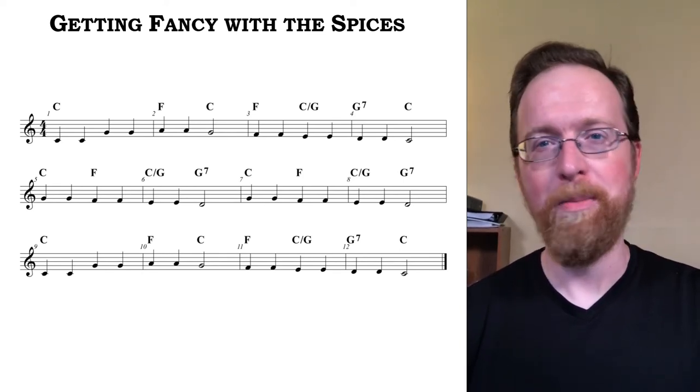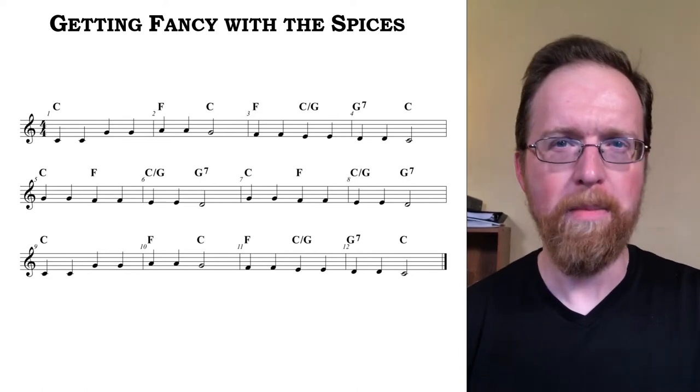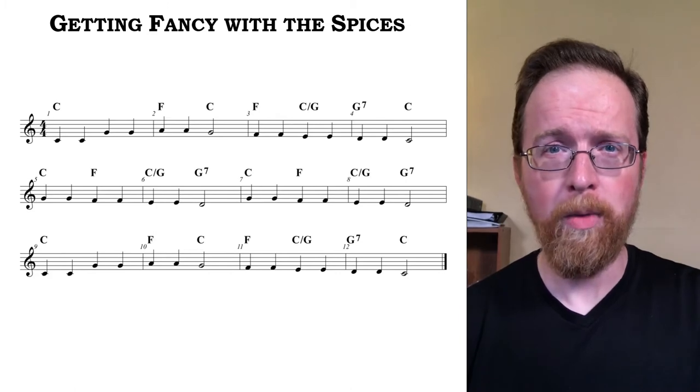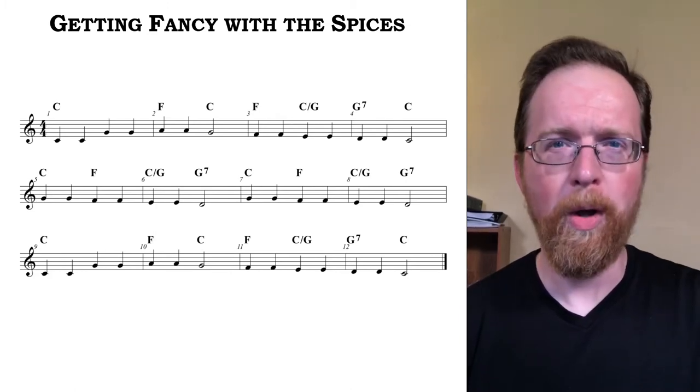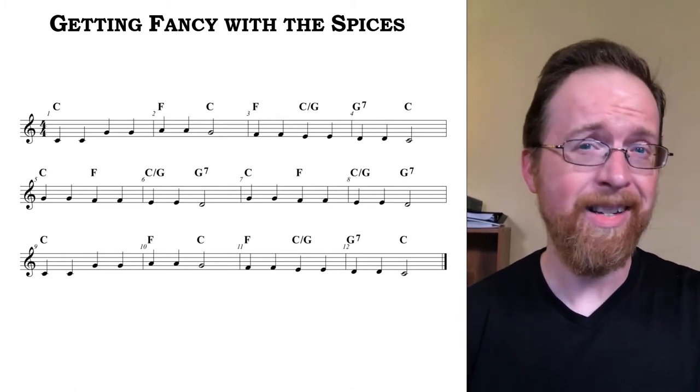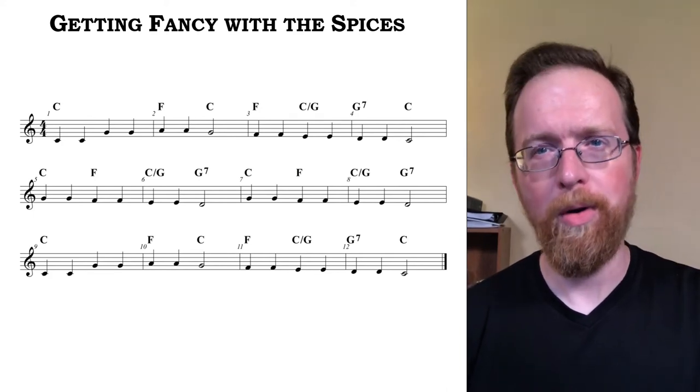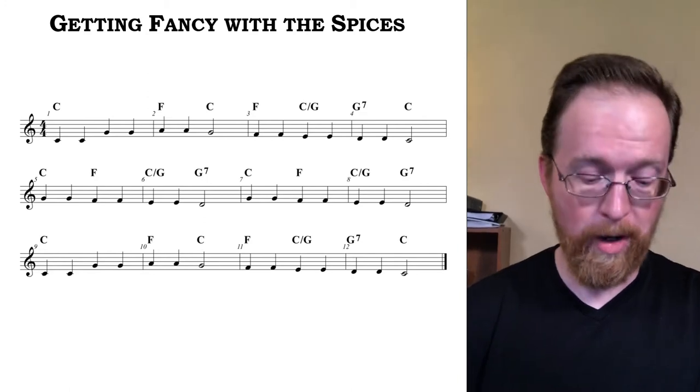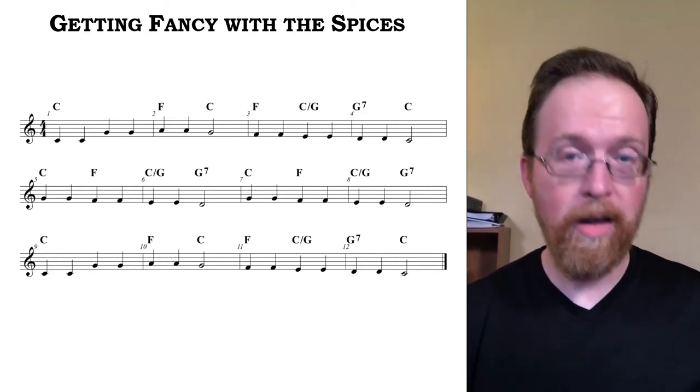We'll start with this simple lead sheet, which only gives us the melody and the most basic of harmonies. Every chord here is a major triad, although we do have the dominant seventh as well. The only other inconsistency is the slash chord, that's the C major over G, which indicates that a C major triad is over G in the bass.